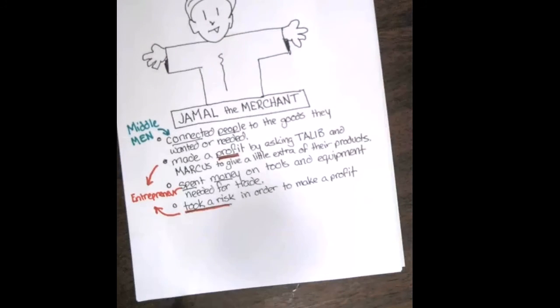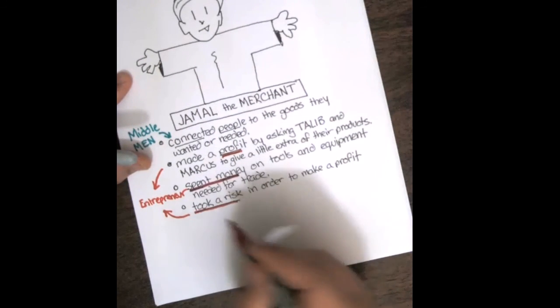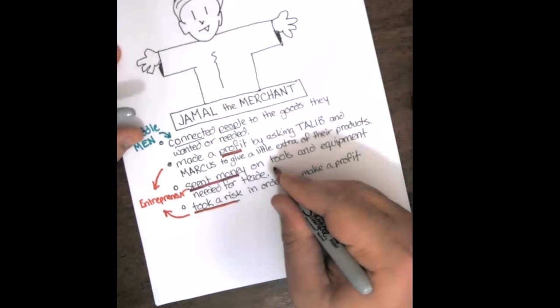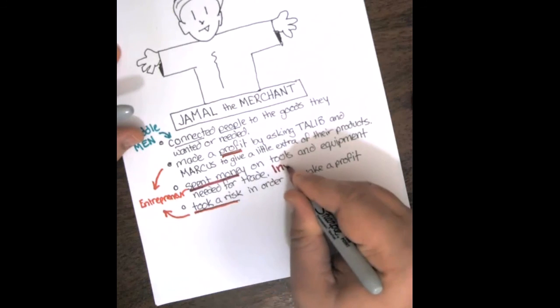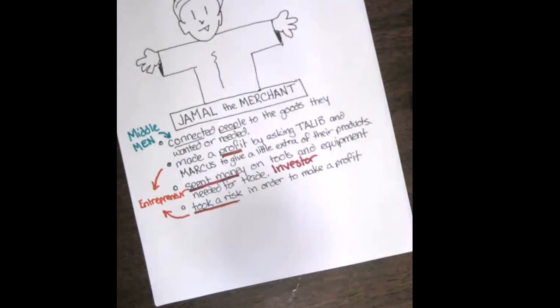And there is one more thing that he is. Jamal spent money on tools and equipment needed for trade. This is a new type of person. This is a person who is what we call an investor. When you spend money on tools and equipment, you become an investor. He has put a lot of money into this. He may lose it, but he also can make some serious money.